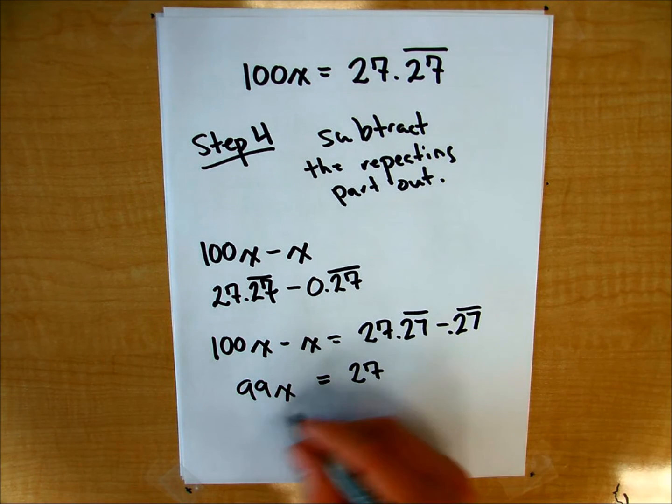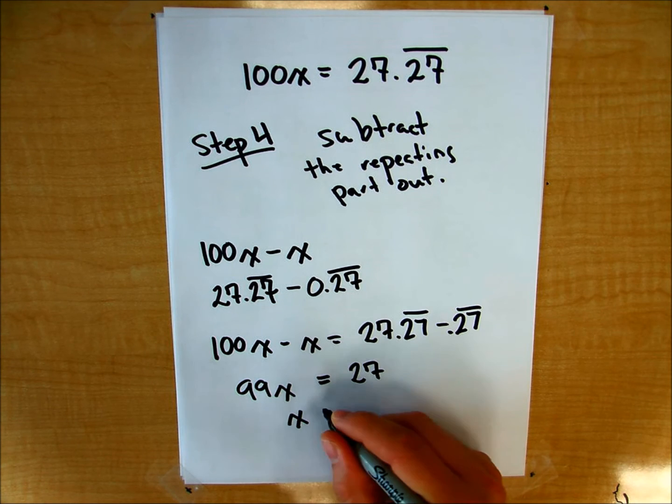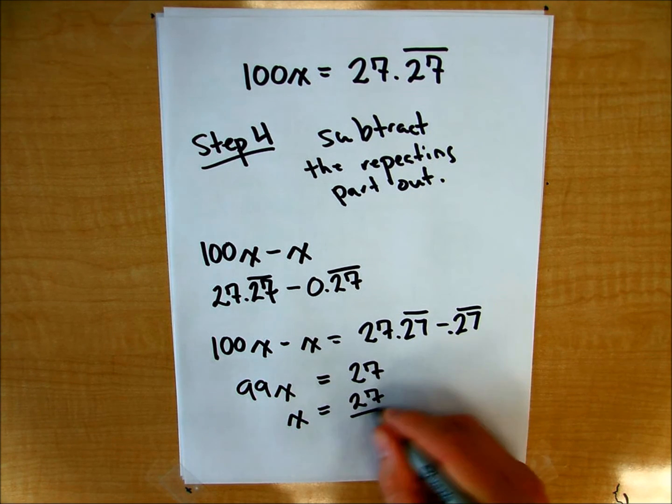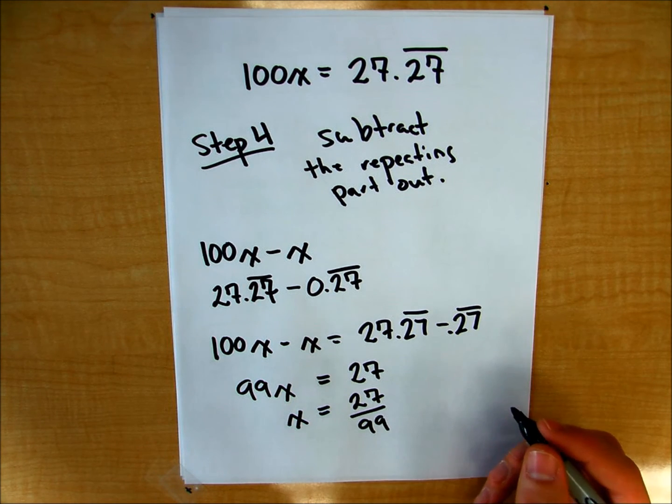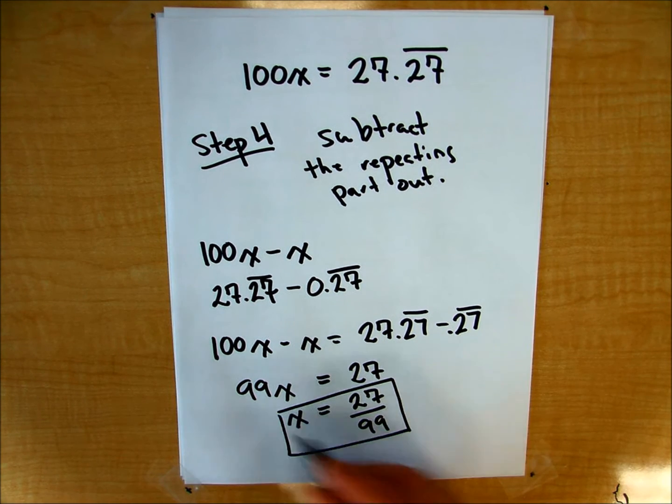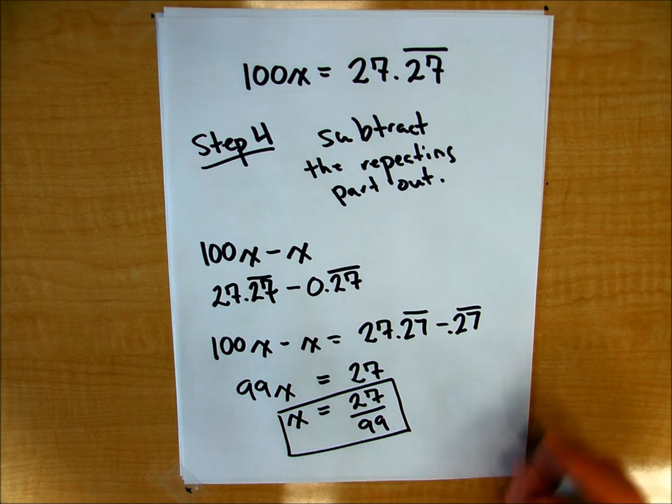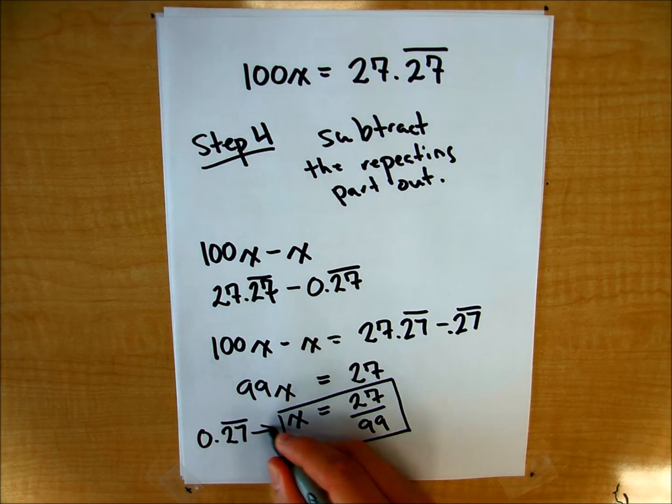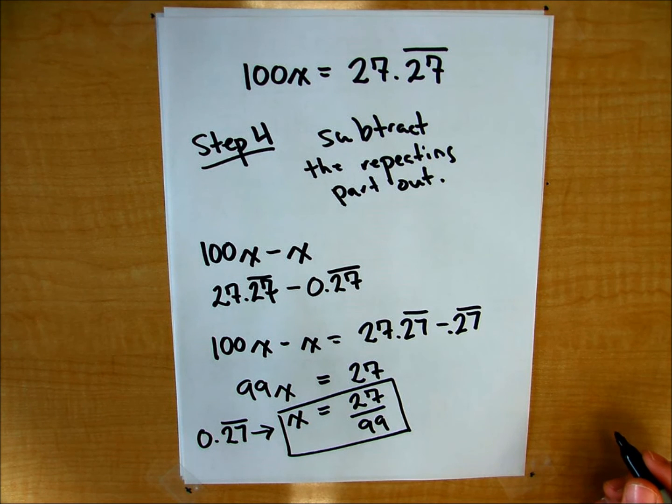Since I'm solving for x, I want to get x alone. I'll divide both sides by 99 and I'm going to get 27 over 99. So the fractional equivalent of 0.27 repeating is 27 over 99.